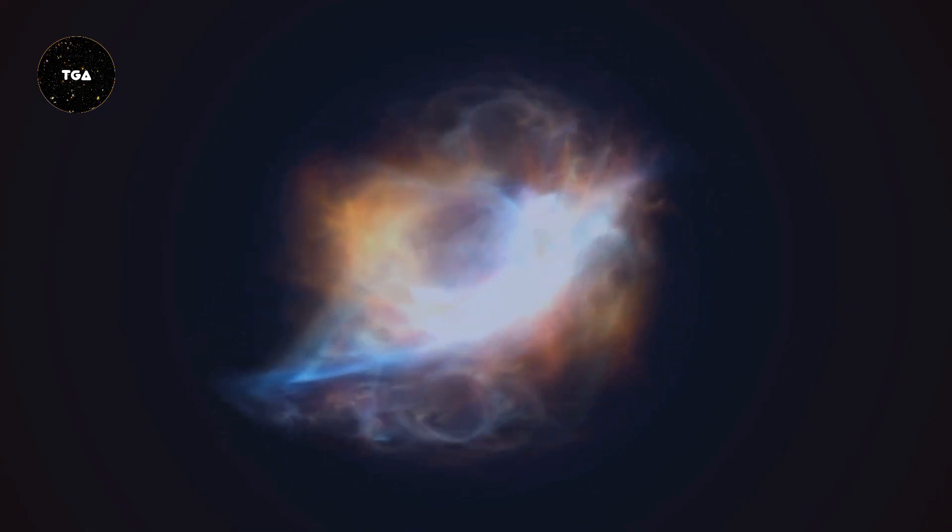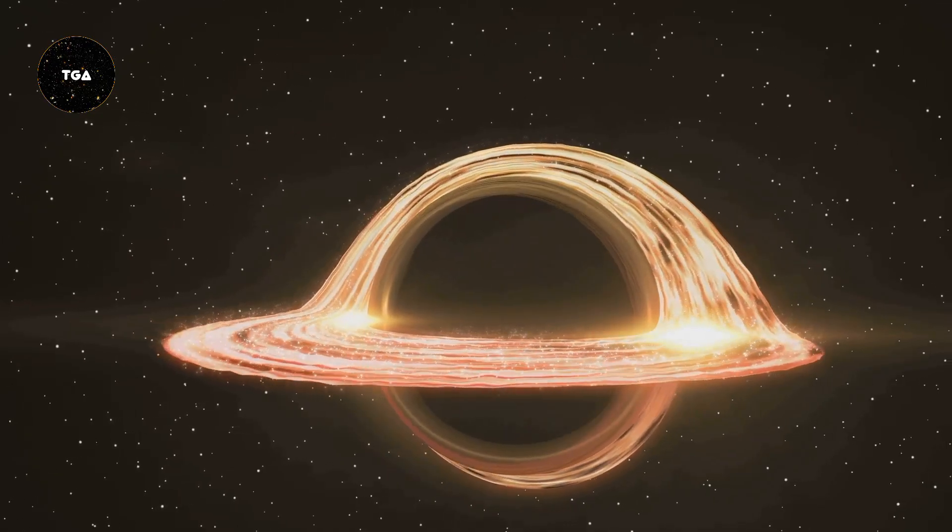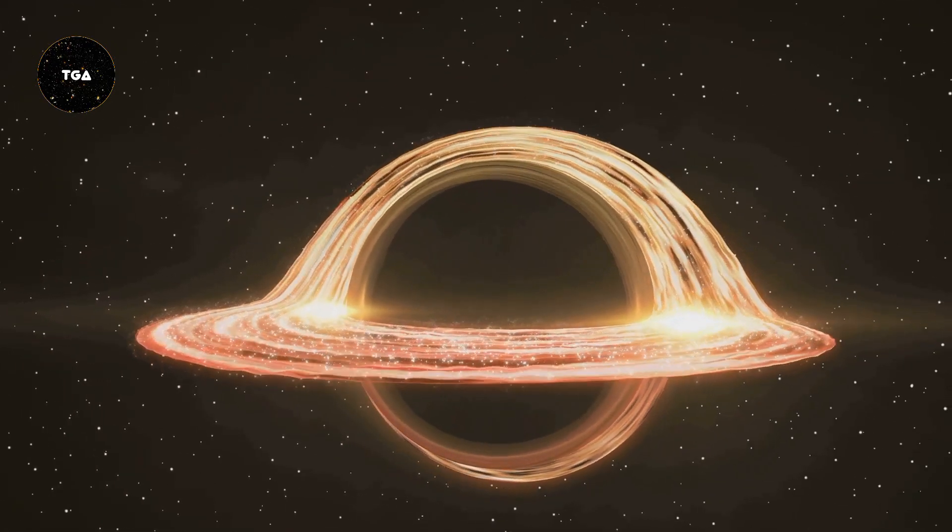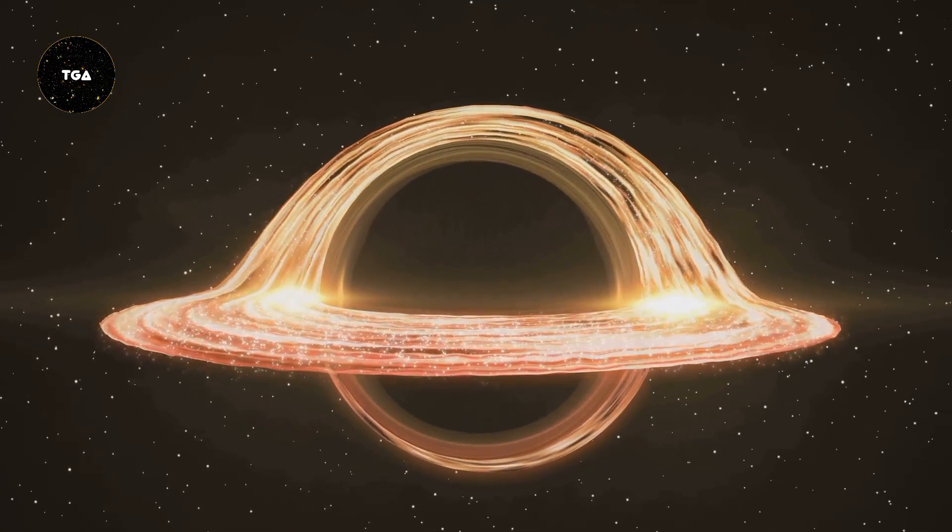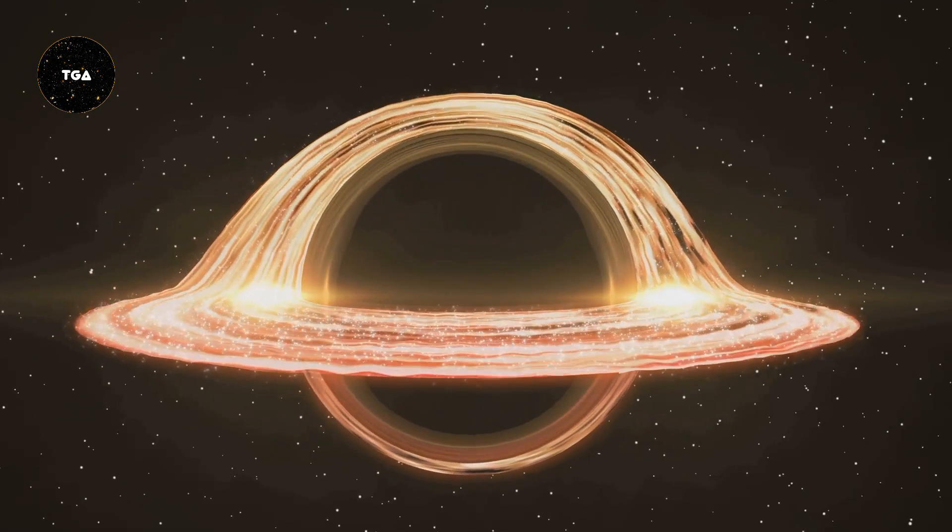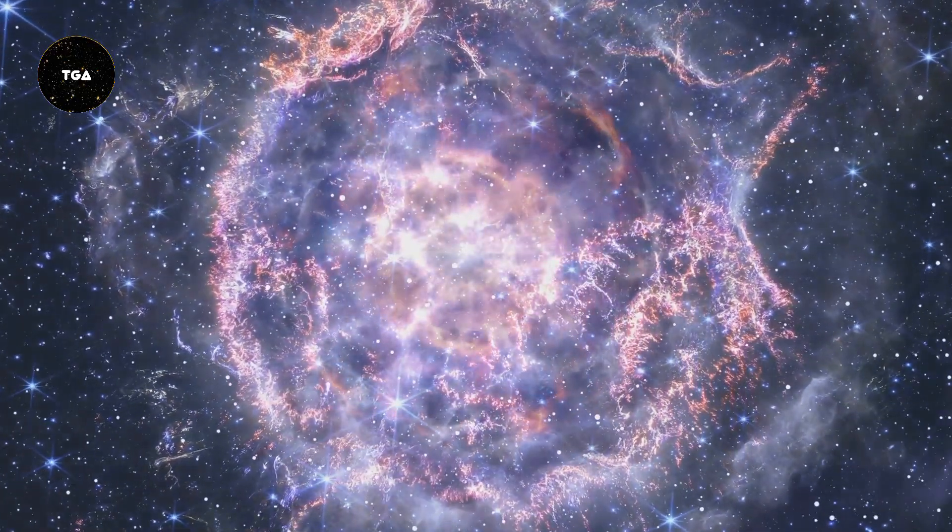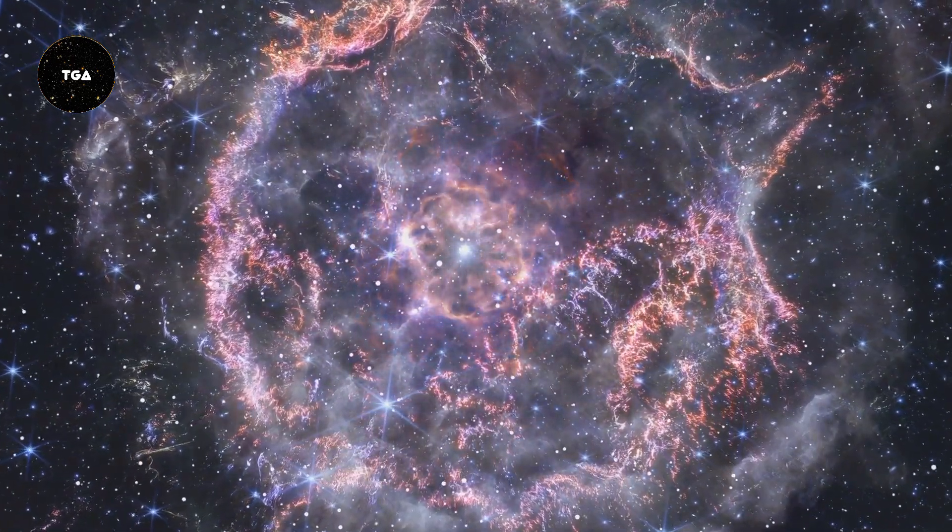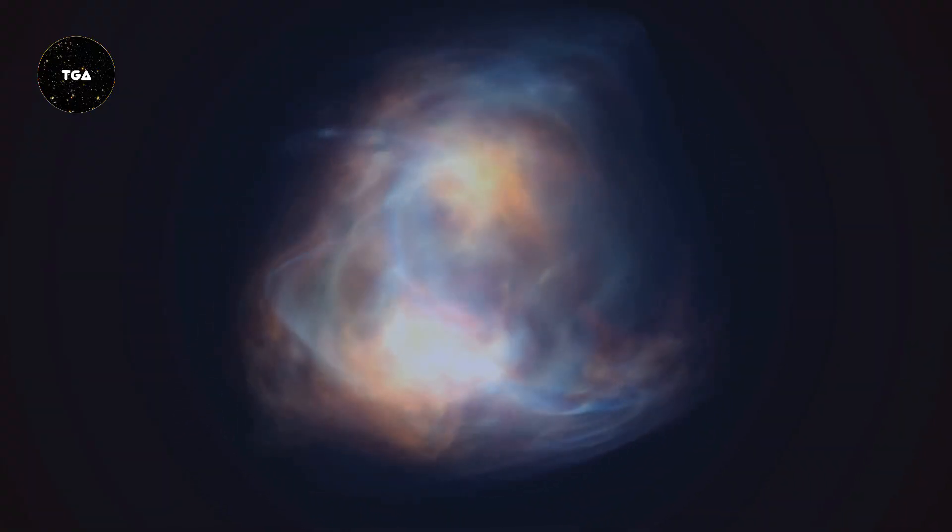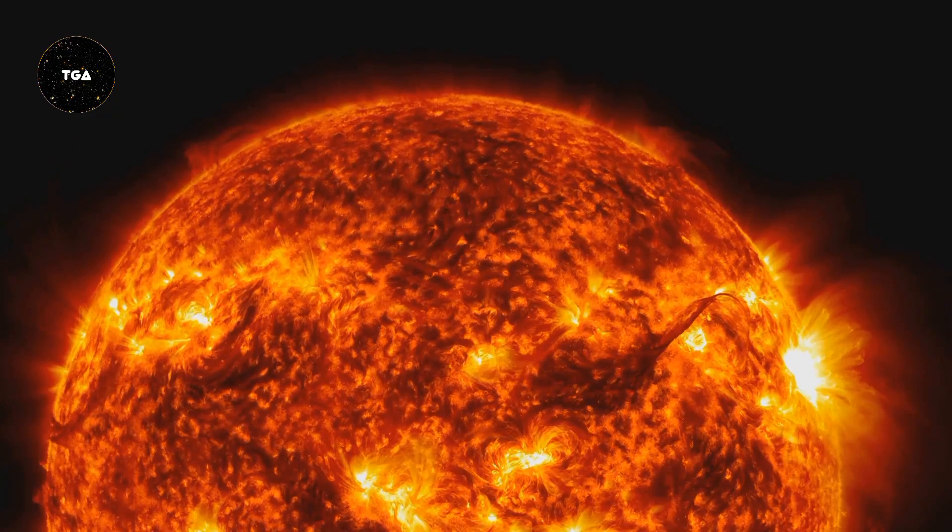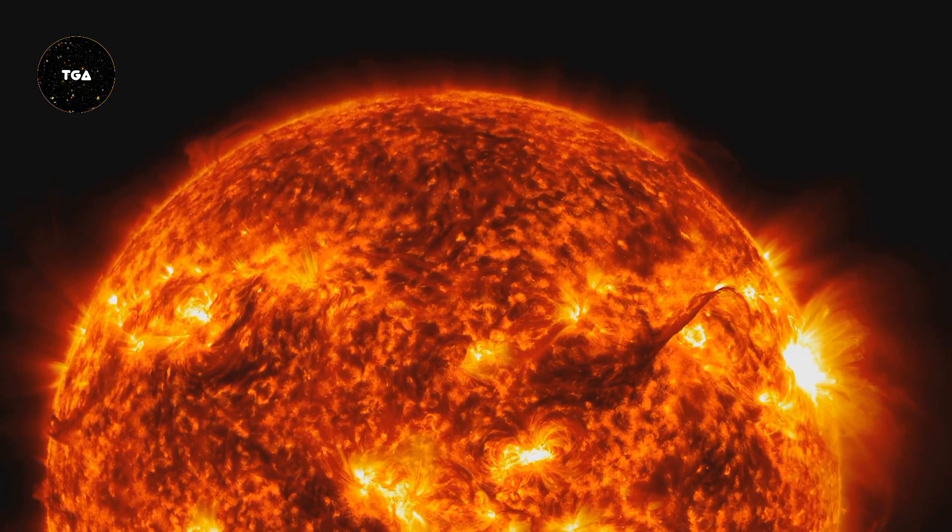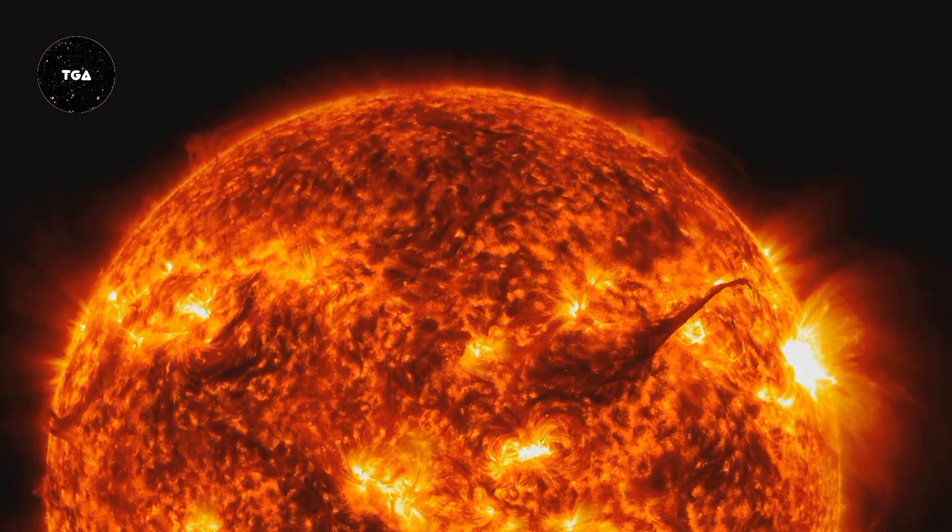There are two main types of GRBs, short and long. Short GRBs last less than two seconds and are thought to result from the merger of two neutron stars or a neutron star and a black hole. Long GRBs last more than two seconds and are associated with the collapse of massive stars. GRBs are incredibly bright, outshining entire galaxies for a brief period. They release more energy in a few seconds than the sun will emit in its entire ten-billion-year lifetime.